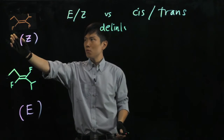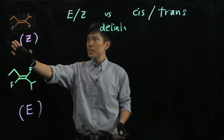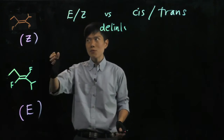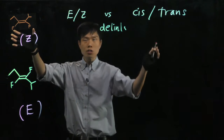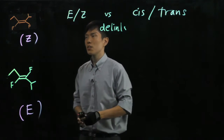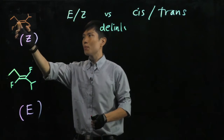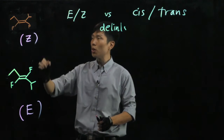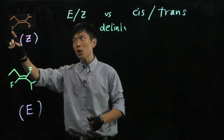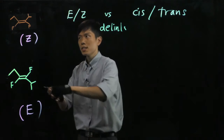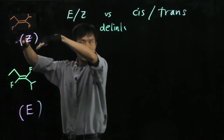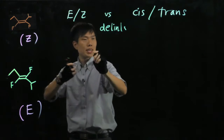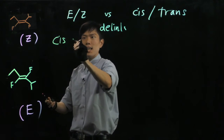Back to this example, we have learned that this could be classified as a Z isomer and that as an E isomer. But if you want to see if this belongs to the cis or trans isomer — looking at the carbon-carbon double bond, we see the same groups on opposite ends. There is a fluorine on both sides, and these fluorines are on the same side of the double bond. So same side means this is a cis isomer.